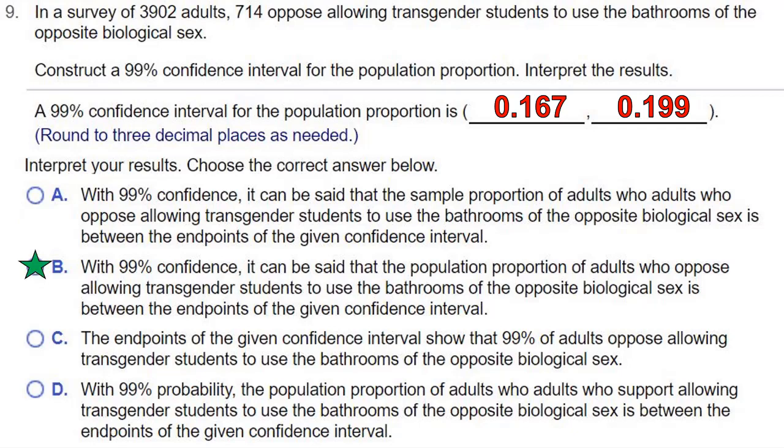The correct choice here is answer B. With 99% confidence, it can be said that the population proportion of adults who oppose allowing transgender students to use the bathrooms of the opposite biological sex is between the endpoints of the given confidence interval. And that's your answer.